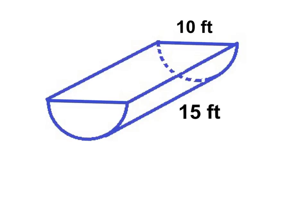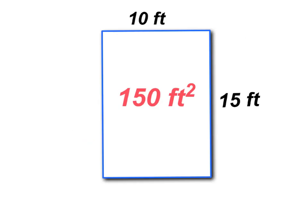So once we identify that the shape inside there is rectangular, we know that the area of a rectangle is 10 times 15, which comes out to be 150 feet squared.